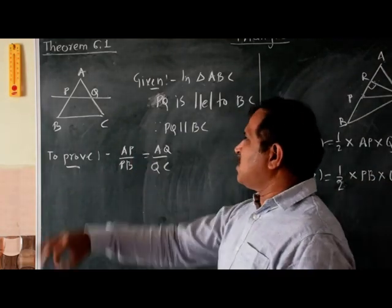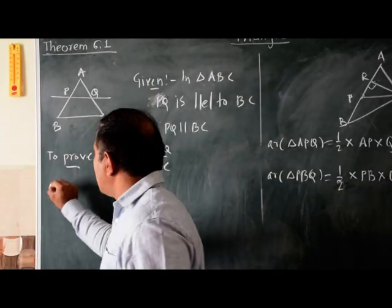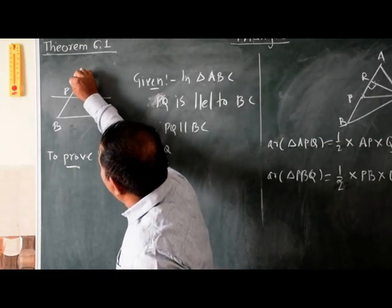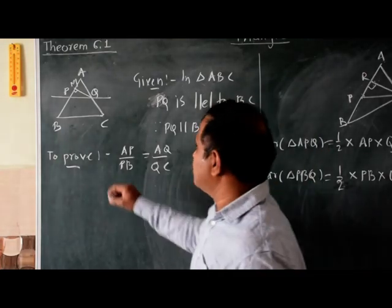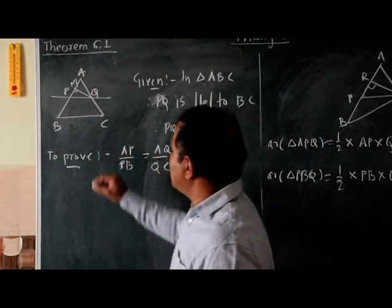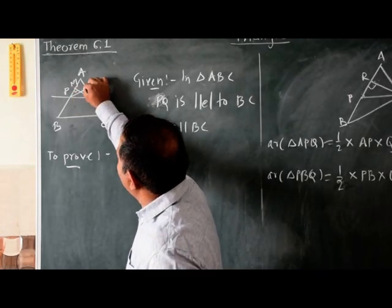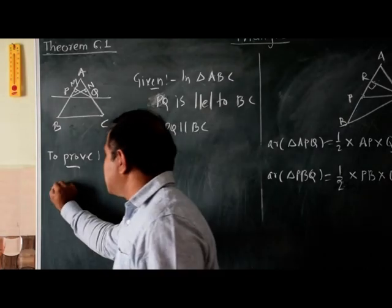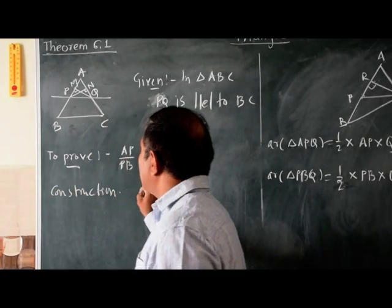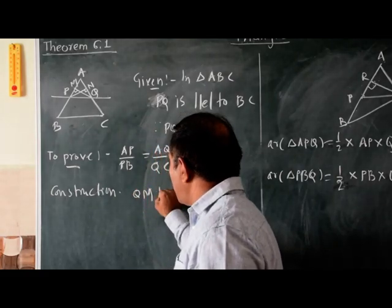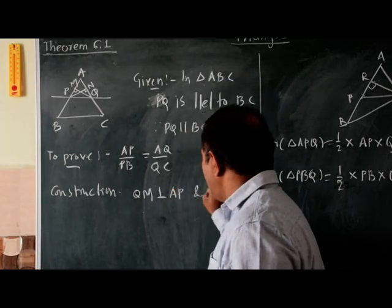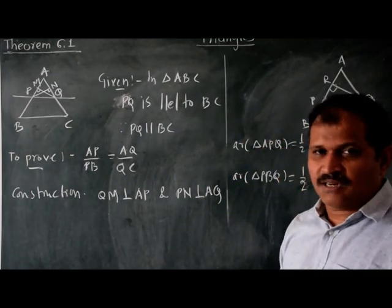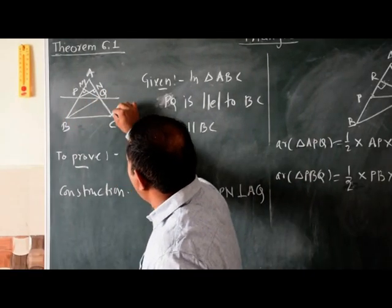Before the proof, we will construct altitudes. Construction: draw perpendicular QM to side AB and perpendicular PN to side AC. So QN is perpendicular to AP and PN is perpendicular to AQ. Also, join BQ and CP.